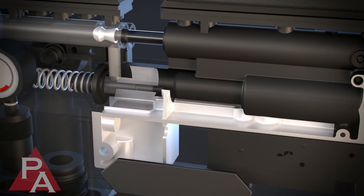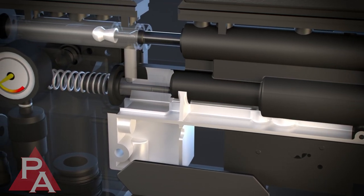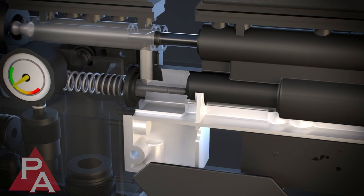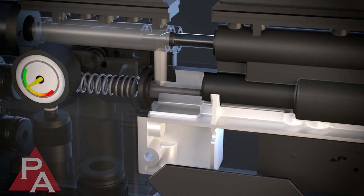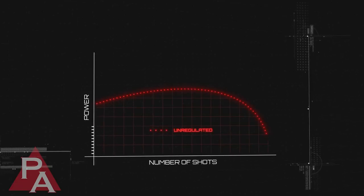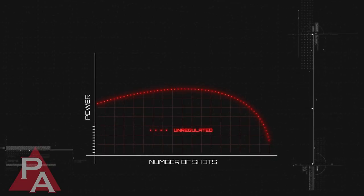The hammer always strikes with the same force, so the amount of air released by the opening valve changes as the rifle's onboard air pressure behind it drops. This impacts the power of the rifle as it progresses through its air charge, resulting in what's known as a power curve.